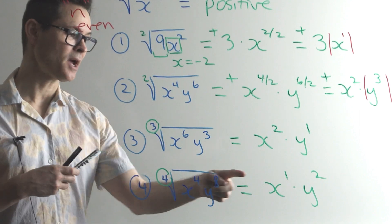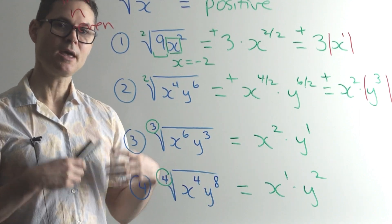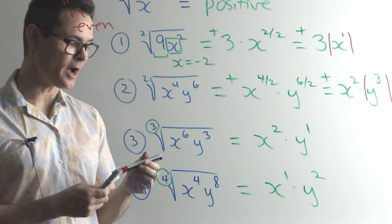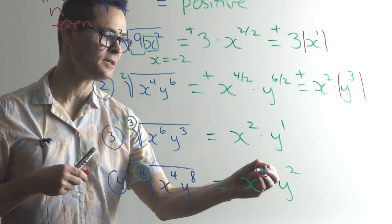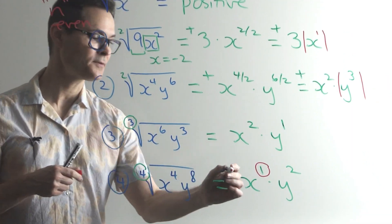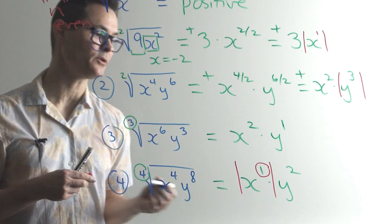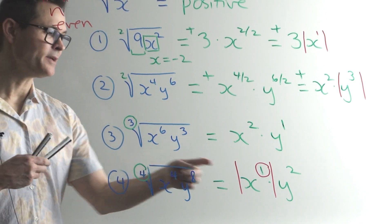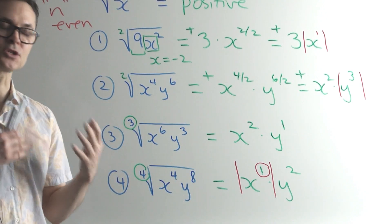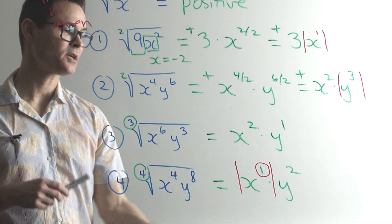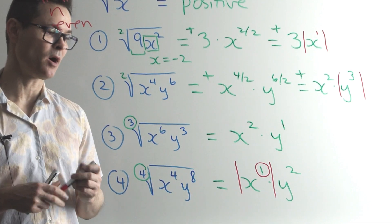So in this case, we check our exponents in the answer. And if either of them are odd, and in this case it is, see, that's a 1, then you have to install your absolute value brackets. I don't need to worry about the y because the square on the y is going to ensure that the answer stays positive.